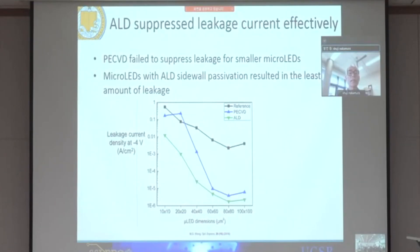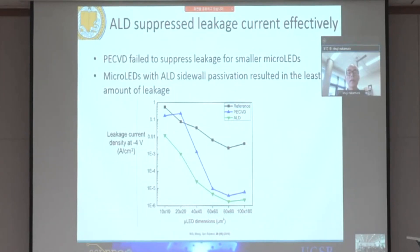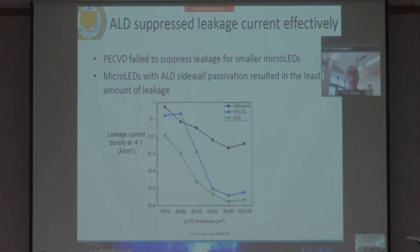This also shows the leakage current as a function of chip size. The green curve is ALD, which shows the smallest leakage current. The blue is PECVD, which still has more leakage. And the reference — no treatment, no passivation on the sidewall — has the highest leakage. So ALD is the best in terms of leakage current for sidewall passivation.